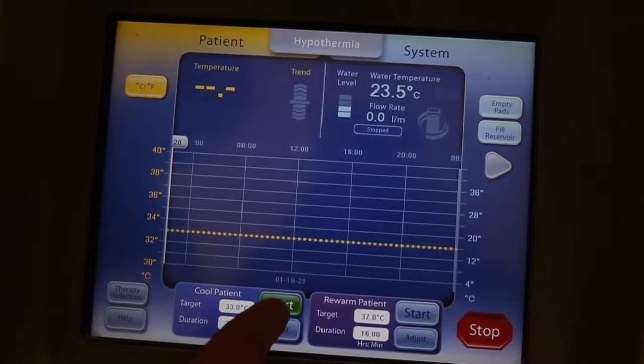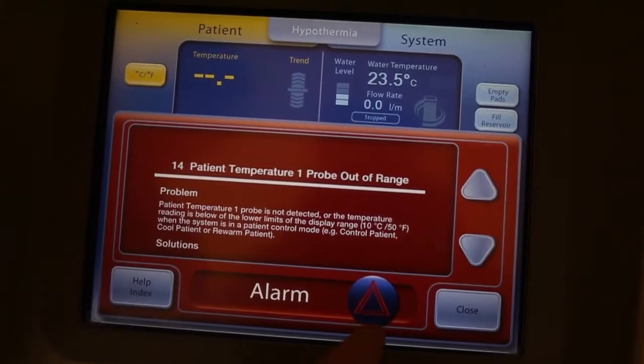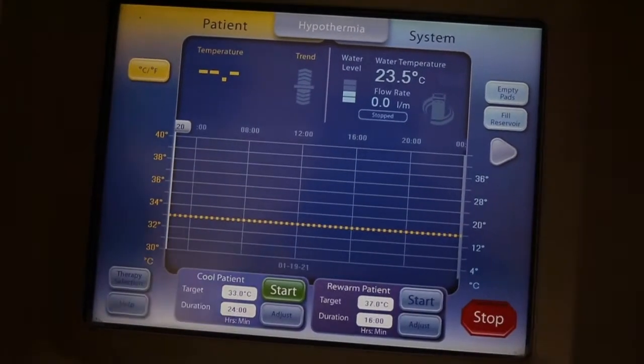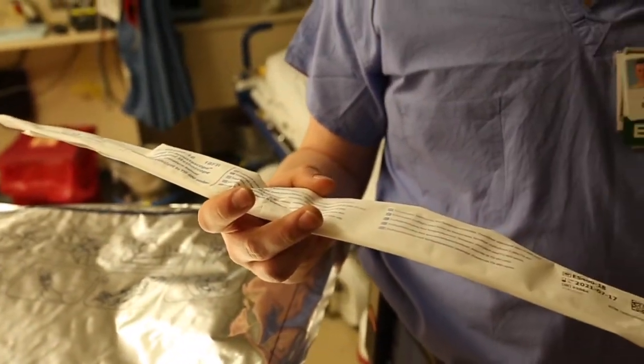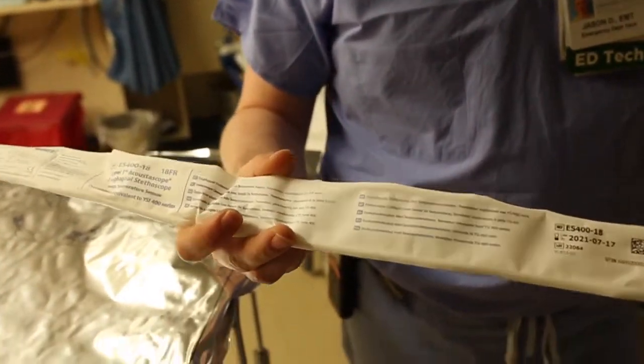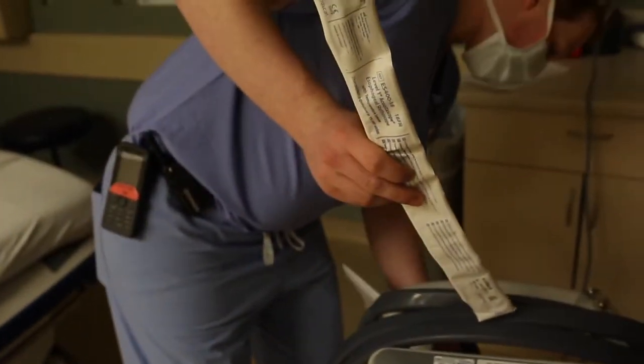To cool the patient, press start. It'll give an alarm because there's no temperature probe. When you get the pads, there's also a box of temperature probes - give this to the nurse and they'll set it up. On the back here there's a wire, and this connector plugs into that adapter for your temperature probe.